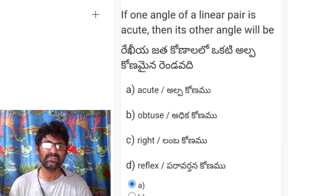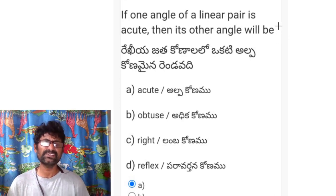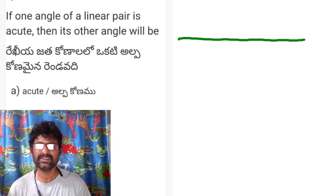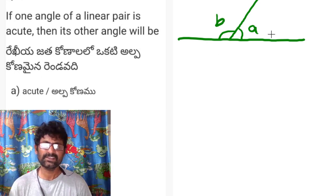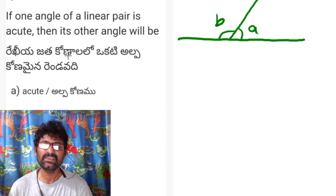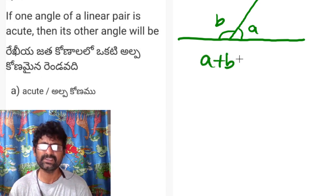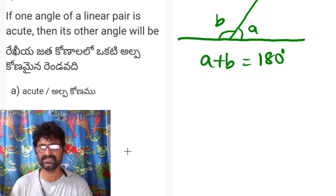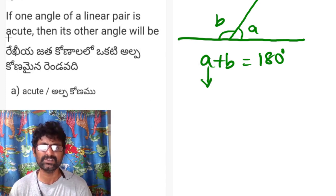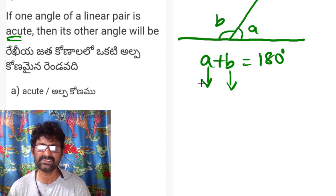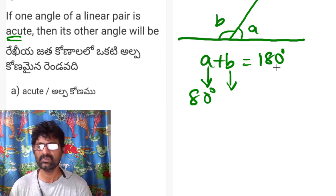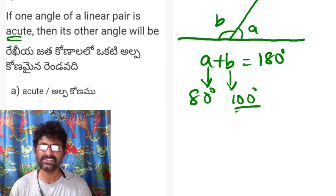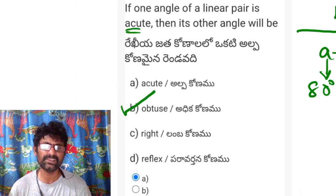Question 3: if one angle of a linear pair is acute, then what is the other angle? A linear pair consists of angles A and B formed on a line, where A + B = 180°. If A is acute, for example 80°, then B must be 100°, which is an obtuse angle. So option B is correct.